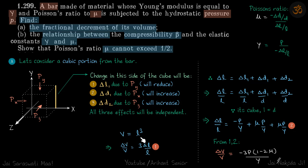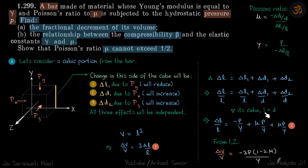We need to find the fractional decrement of volume. The volume of the cube is l³, so delta V by V equals 3 times delta l by l. The total delta l is the sum of all three contributions: delta l1 plus delta d1 plus delta d2. Dividing everything by l, and since it's a cube, l equals d on all sides.